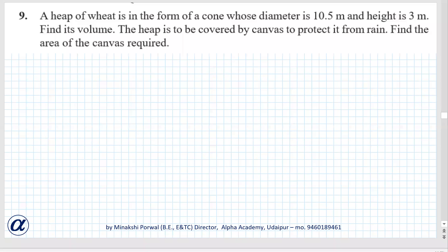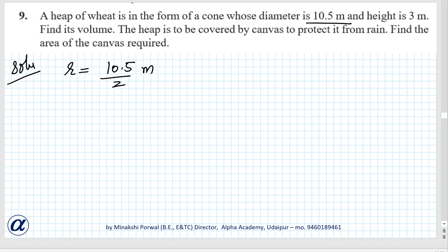Exercise 13.7, question number 9. A heap of wheat is in the form of a cone whose diameter is 10.5 meters. So the radius is 10.5 divided by 2 meters. A heap of wheat is formed in the shape of a cone.